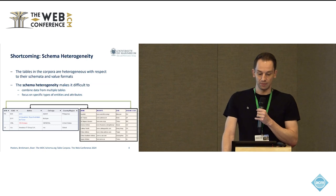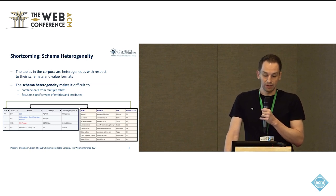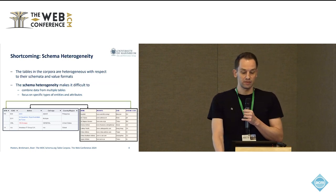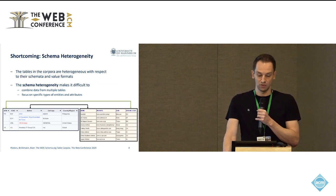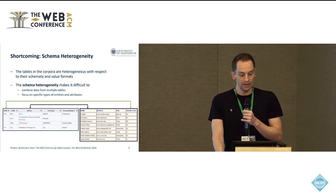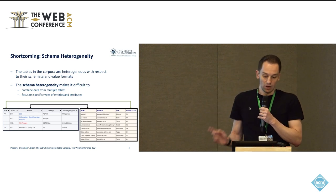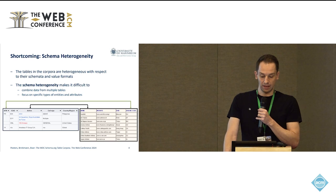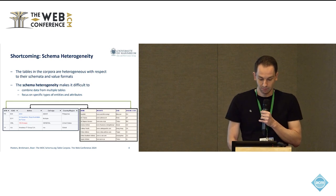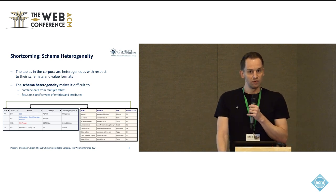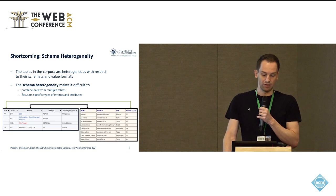So what's the shortcoming of these existing corpora? First of all, they are heterogeneous with respect to their schemata and value formats, and especially this schema heterogeneity among the tables makes it quite difficult to combine data from multiple tables together, or for example focus on specific types of entities and attributes. If you look at the example here, we have two tables of airlines, and the arrows show some of the matching columns — the name of the airline is called 'name' in one table and 'airline' in the other. So it's not completely trivial to match these tables without doing some kind of schema matching process.